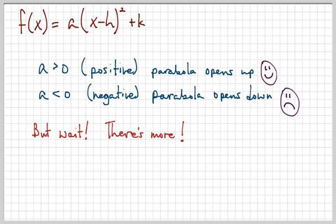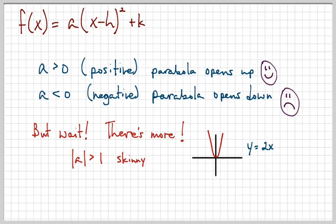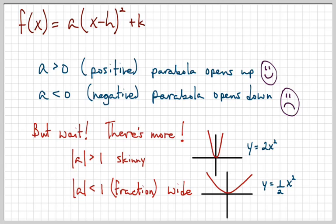But A does more than just determine which way it opens — A also determines how quickly the graph gets wide. If the absolute value of A is greater than 1, such as 2, 3, or 4, the graph is going to look skinny. But if A is less than 1 — that is, if A is a fraction — the graph is going to look wide. Here the graph of 2x squared is skinnier than the original, and the graph of one-half x squared is very wide.